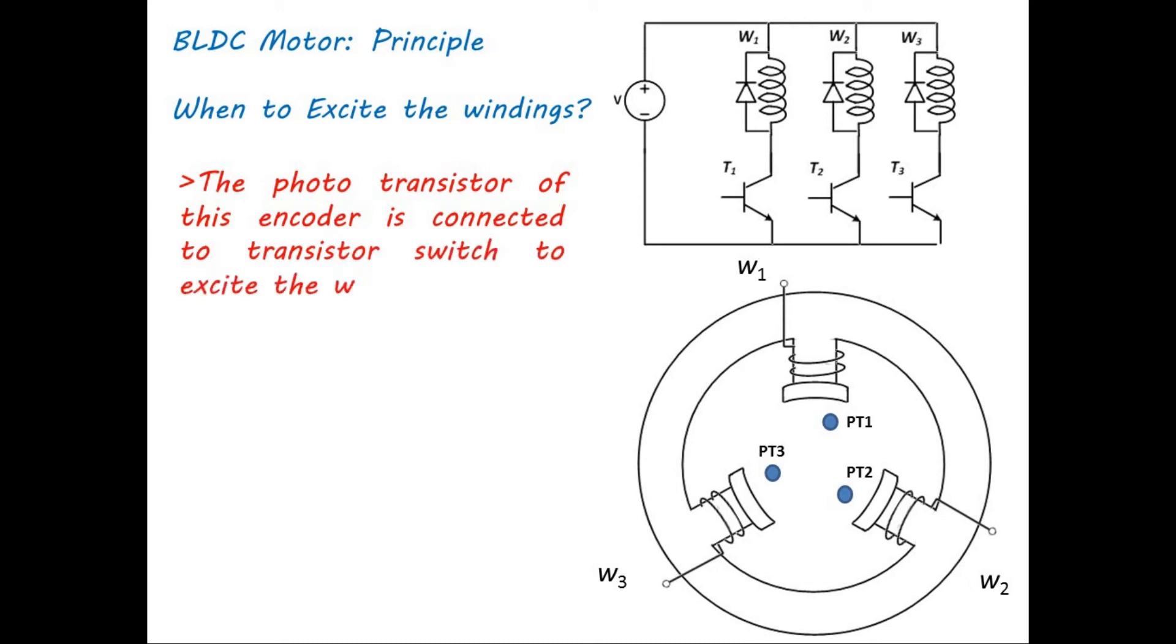Whenever phototransistors receive the light, that corresponding phototransistor is turning on and also makes the transistor on. The phototransistor 1 is connected to transistor T3, the phototransistor 2 is connected to transistor T1, and the phototransistor 3 is connected to transistor T2 for clockwise rotation.